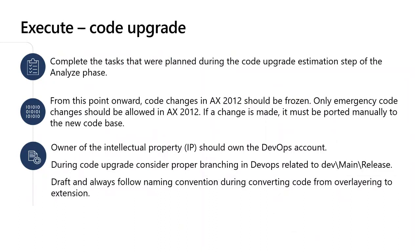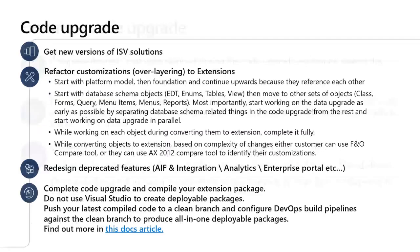The third step is to perform the code upgrade activity. You need a development environment to complete this. Complete the tasks planned during the code upgrade estimation step of the analyze phase. From this point onward, code changes in AX 2012 should be frozen — only emergency code changes should be allowed, and if a change is made it must be ported manually to the new code base. The owner of the intellectual property should own the DevOps account. During code upgrade, consider proper branching in DevOps (dev, main, and release). Always follow naming conventions when converting code from overlaying to extensions. Customers should get new versions of ISV solutions from their respective ISV partners early, as this takes time.